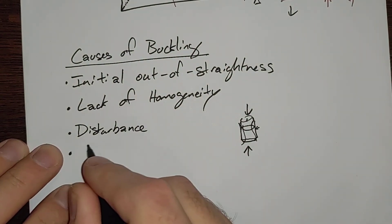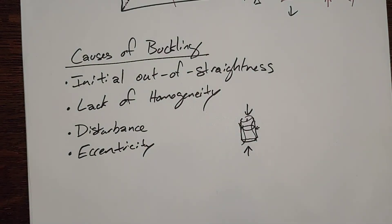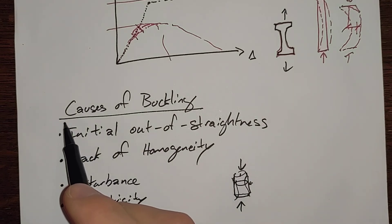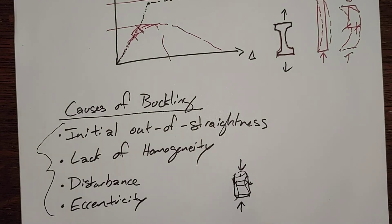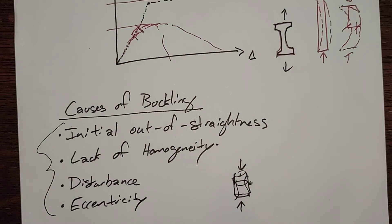And finally, you could have some sort of eccentricity in your load — you just haven't loaded it quite smack in the middle, which is likely. In real beams, columns, or structural members of any sort, you're likely to have a little bit of all of these going on. Steel is pretty homogenous, so you're not likely to have lack of material homogeneity, but you might have differential cooling where the side that was down on the rollers cooled faster, or one side had a little more air flowing over it.